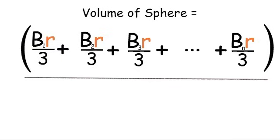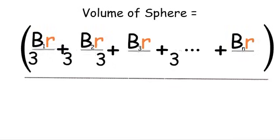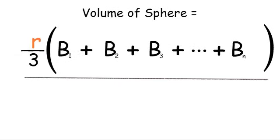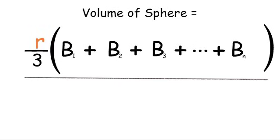So next we will use algebra and begin by factoring out a 1 over 3 and we will also factor out the radius, giving us r over 3 times the sum of all bases.